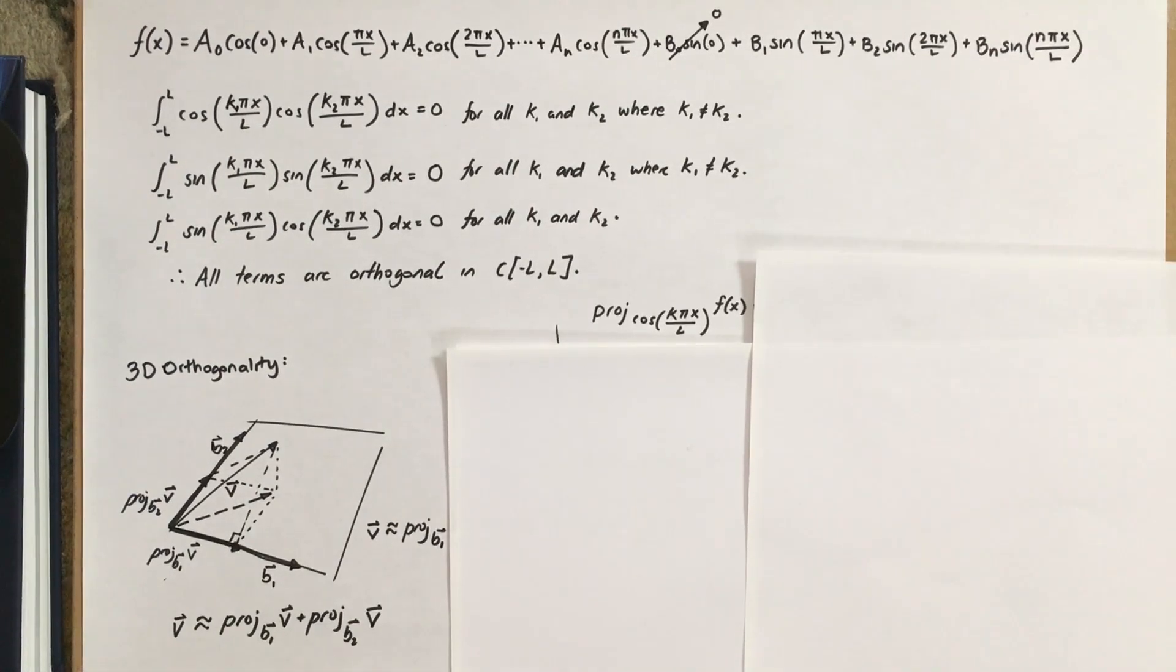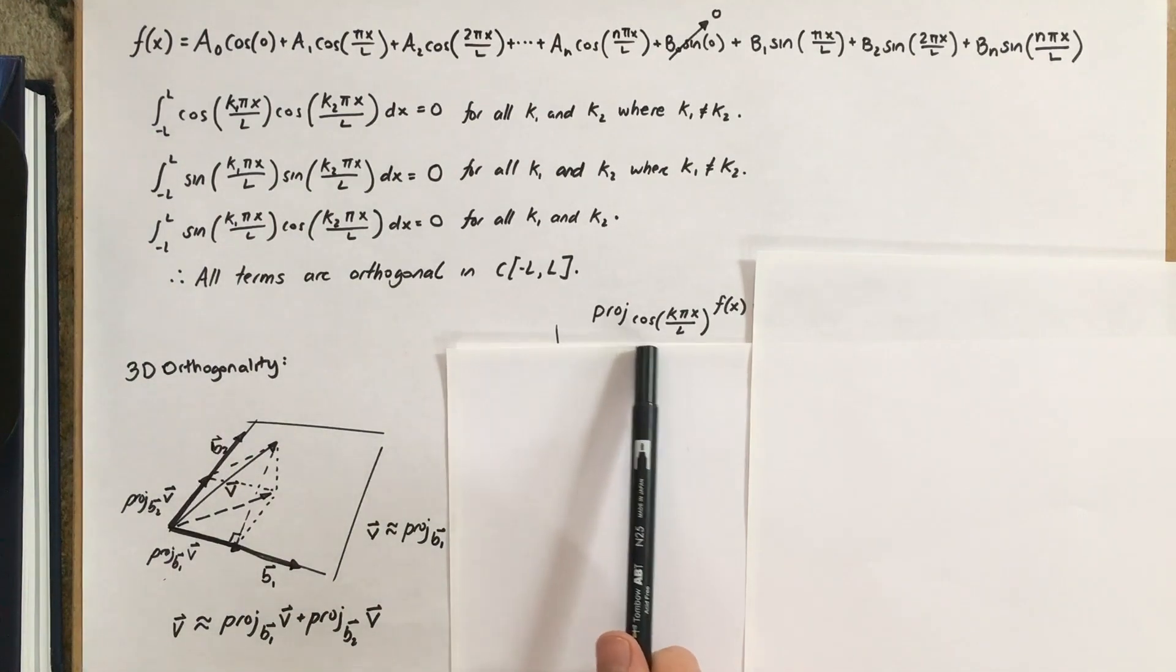So, now let's try projecting f of x onto one of these terms. So, we're going to use a general form, cosine k pi x over L, where k is just some random integer. It could be 1, 4, 29, whatever you want. We'll keep it general for now.